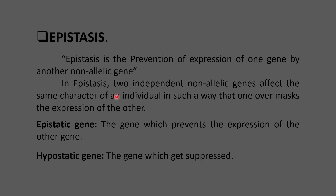In epistasis, two independent non-allelic genes affect the same character of an individual in such a way that one overmarks the expression of the other. In simple words, epistasis can be defined as the prevention of expression of one gene by another non-allelic gene. This is the important word here.